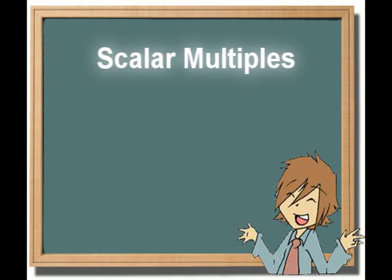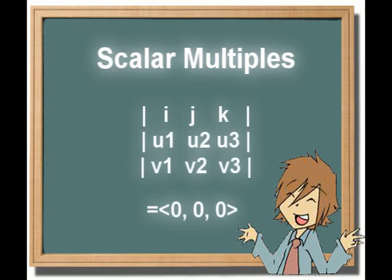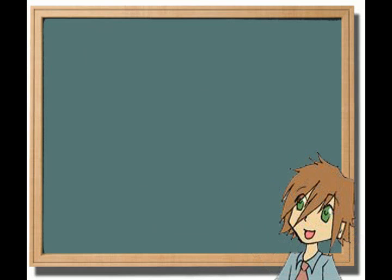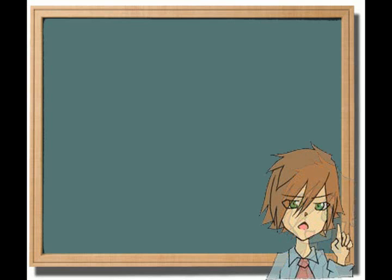On the other hand, two vectors are orthogonal if their cross product is equal to the zero vector, or 0, 0, 0. All right, that wraps it up for vector algebra in 3D. My work here is done. Now you had all better ace that final, or so help me.